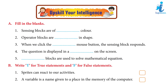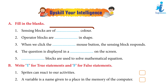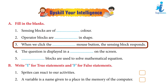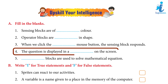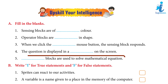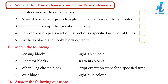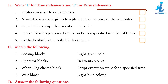Fill in the blanks: One, sensing blocks are of light blue color. Two, operator blocks are round in shape. Three, when we click the right mouse button, the sensing block responds. Four, the question is displayed on the stage on the screen. Five, operator blocks are used to solve mathematical equations.